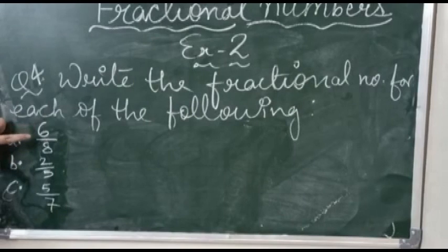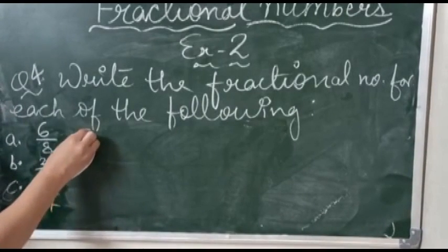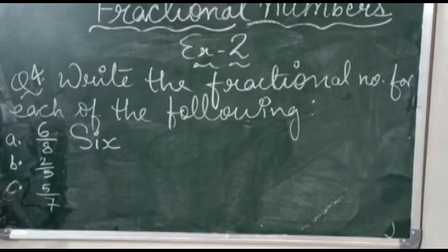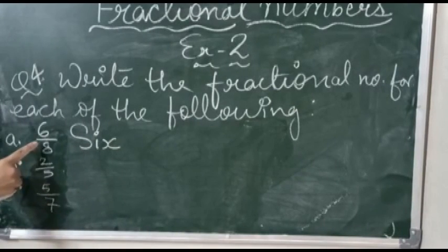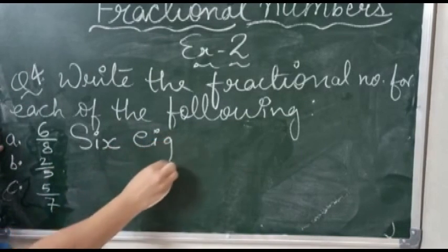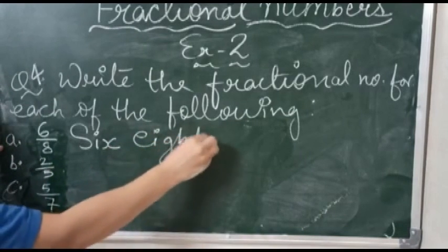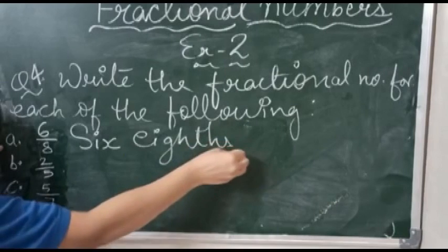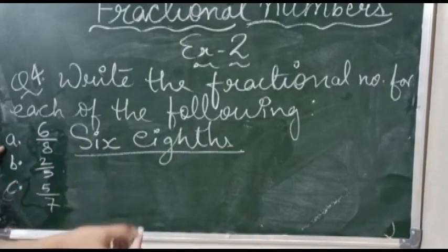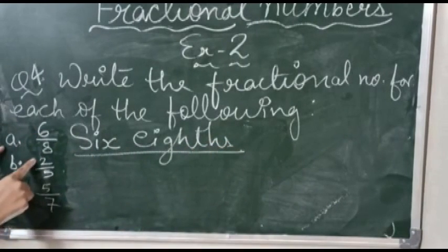The upper number is 6, so here I am writing 6. The denominator number is 8, so for 8 we will call it 'eighths' (E-I-G-H-T-H-S). So this is called six-eighths. The second number is 2 by 5, so we write 'two' for the numerator and 'fifths' (F-I-F-T-H-S) for the denominator.